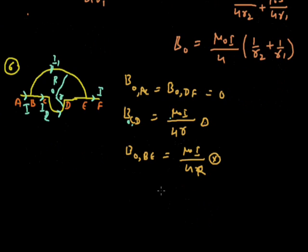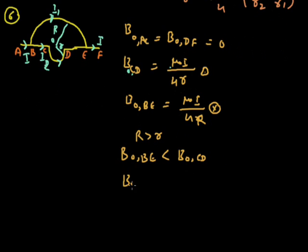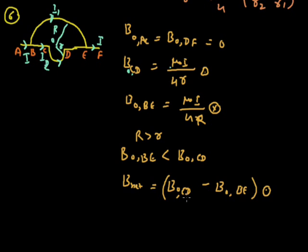B at O due to wire BE is simply μ₀I / 4R. Due to the clockwise current, the magnetic field will be inward. The radius here is capital R. Since capital R is greater than small r, B(BE) is less than B(CD). So the net magnetic field is B(CD) minus B(BE), directed outward — the value being μ₀I/4 × (1/r − 1/R), directed outward.